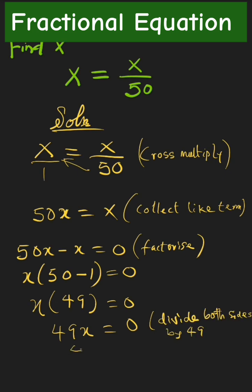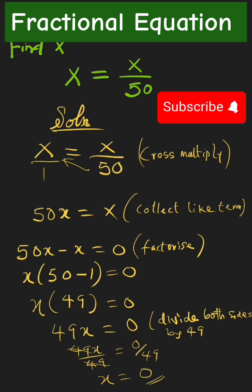We have 49x all over 49 equals 0 all over 49. The 49s cancel, leaving x. Zero divided by 49 equals 0. So our answer is x equals 0. If this helped, please subscribe, like and share. Thank you.